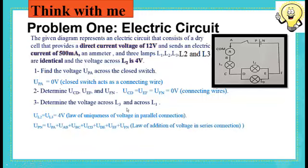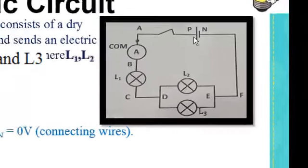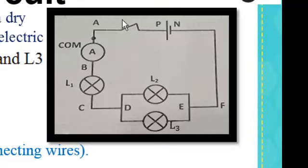We still have to get the voltage across the terminals of L1, which is UBC. To get this voltage, let's think about the voltage of the whole circuit. UPN is equal to UPA plus UAB plus UBC plus UCD plus UDE plus UEF plus UFN.